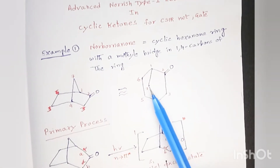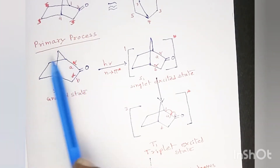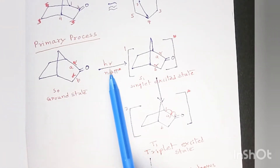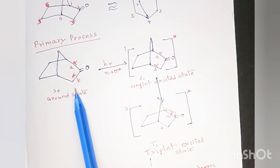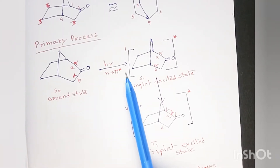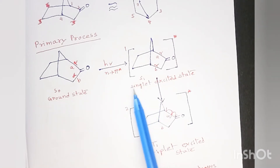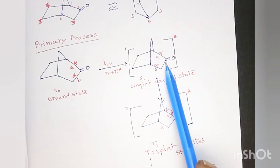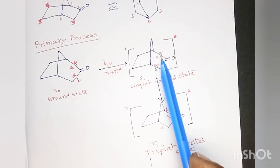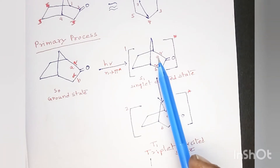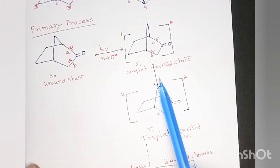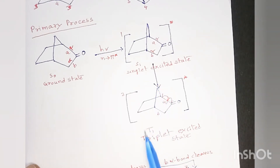What happens in the Norrish Type 1 reaction of Norbornenone? Let's see the primary process. When it is irradiated by UV light, the compound in the ground state will undergo n to π* transitions and enters the singlet excited state S1. This is the singlet excited state of Norbornenone. It has two alpha bonds — let them be A alpha bond and B alpha bond.